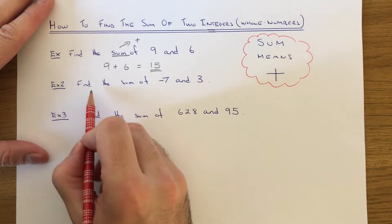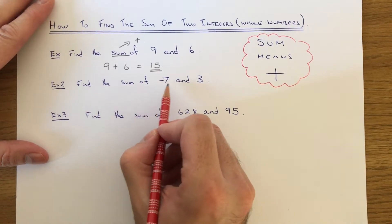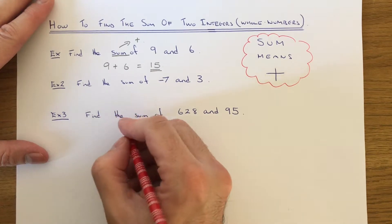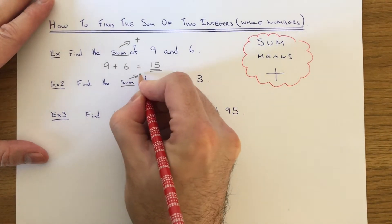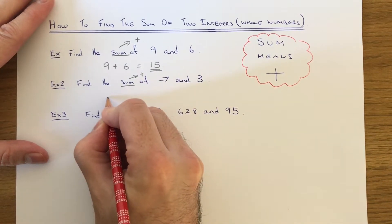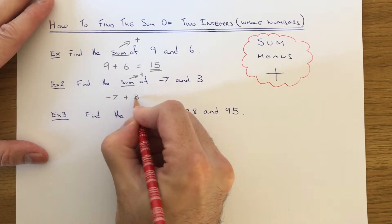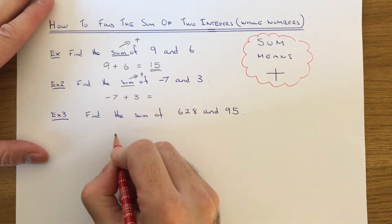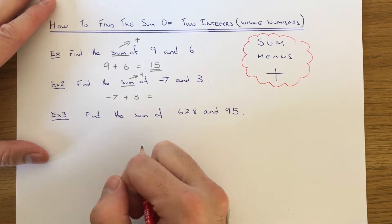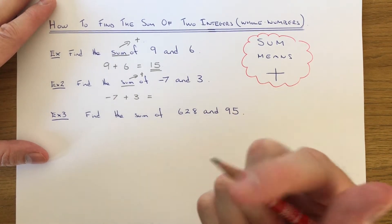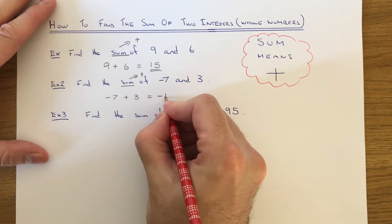Let's move to example two. This time we've got to find the sum of minus seven and three. Again, just need to remember that sum means add. So we need to work out minus seven add three. Make sure you go the right way on the number line on this one. Minus six, minus five, minus four would be the answer.